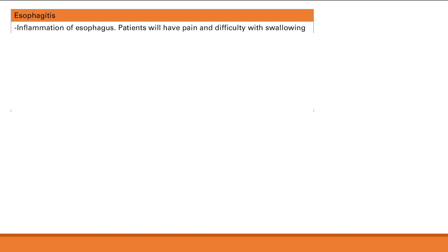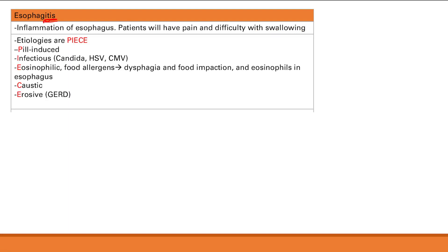Next is esophagitis — simple inflammation of the esophagus. These patients will have pain and difficulty with swallowing. There are many etiologies, remembered with the mnemonic PEACE. P is for pill-induced: a large pill goes down your esophagus and gets stuck, and if the patient doesn't drink enough water it causes inflammation of the esophagus.